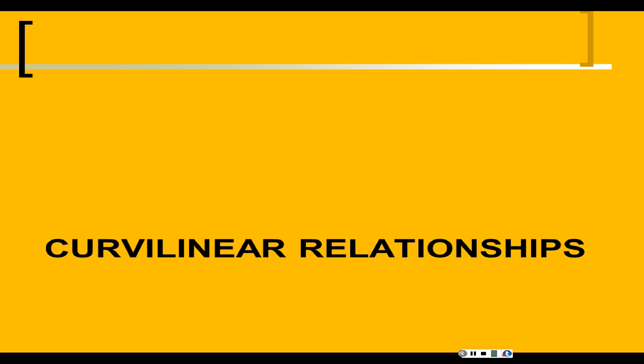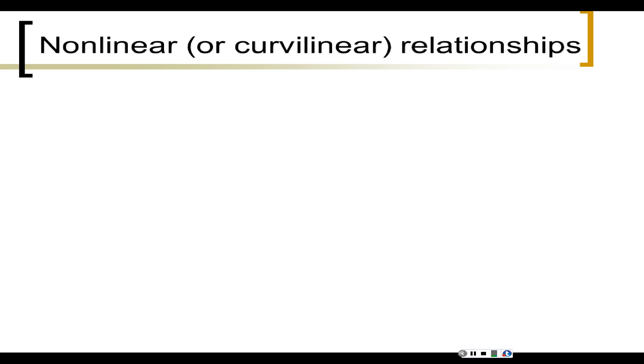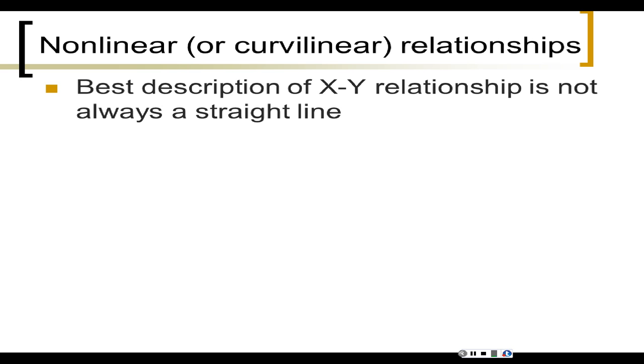Violating condition number one — one of the big ways to do that is to have a curvilinear relationship. If you have a curvilinear relationship, it's not really a problem as long as you recognize it. If you don't recognize it then you can't do anything about it. So let's look at an example of some curvilinear relationships. The best description of x and y's relationship might be a curve.